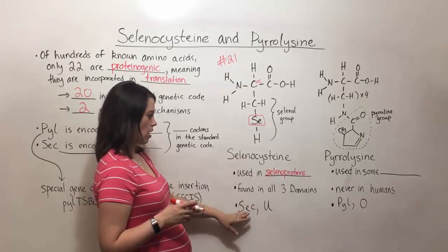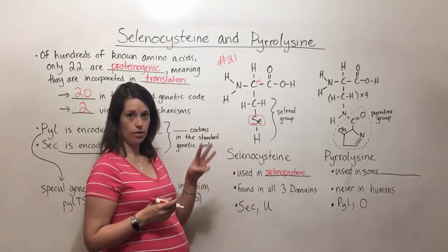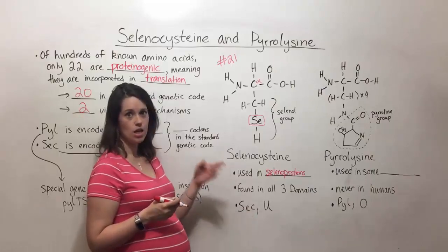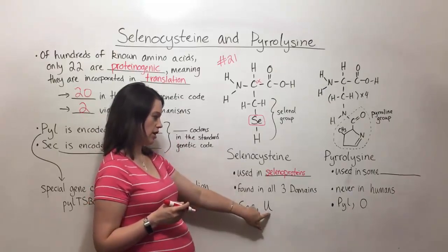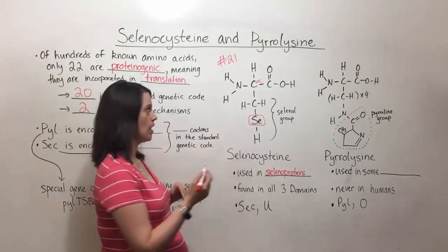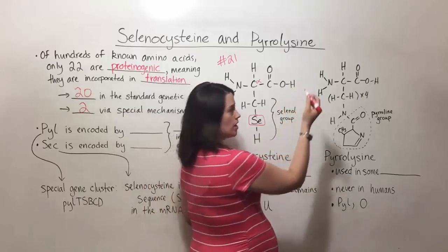When we are referring to selenocysteine using the three-letter abbreviation for amino acids, it's SEC. Using the one-letter abbreviation, U is the one-letter abbreviation that has been designated for selenocysteine. Now we'll move on to number 22.